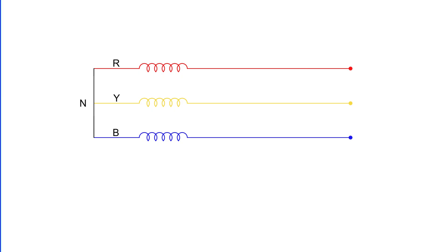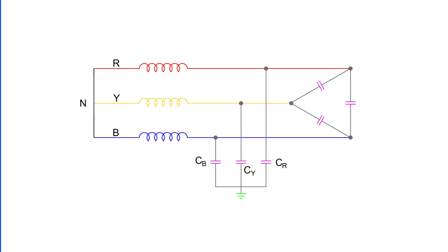Let's begin with what exactly an ungrounded neutral system is. In such a system, the neutral point is not connected to the ground, meaning it's isolated from the earth. That's why this setup is also called an isolated neutral system or a free neutral system. The system consists of three phase lines R, Y, and B, and the neutral N is not earthed. The line conductors have capacitance both between each other and to the ground. The delta-connected capacitances don't really affect the earth circuit, so we can neglect them.